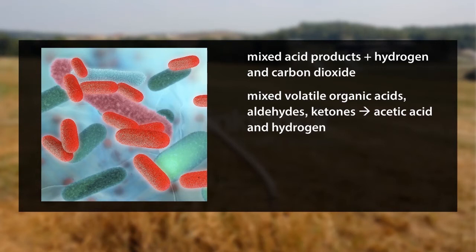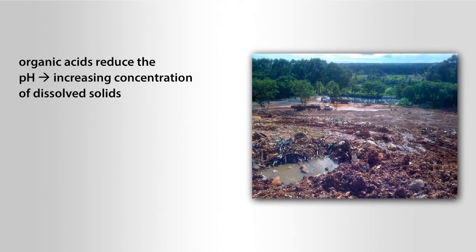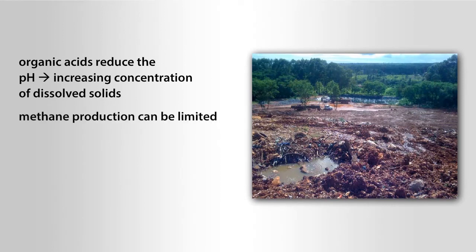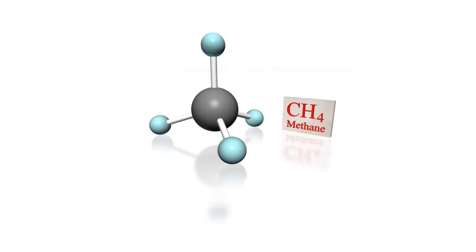Examples of mixed volatile organic acids include formic, acetic, propionic, and butyric acid. These organic acids reduce the pH, which increases the solubility of some organics and inorganics, increasing the concentration of dissolved solids in the leachate. Methane production can be limited during this stage, since the low pH of 5 to 6 is somewhat toxic to methanogenic, methane-producing bacteria.